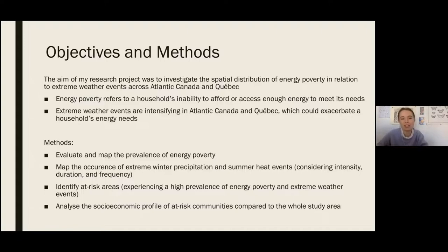So the methods for this project were to evaluate and map both energy poverty and extreme weather events. So for extreme weather events, I was considering intensity, duration, and frequency of these events. And then from there, I could identify at-risk areas. So these were census subdivisions, which is a geographical scale that one can look at, that were experiencing both high prevalence of energy poverty and extreme weather events. And then finally, I analyzed the socioeconomic profiles of these communities and compared them to the whole study area to see if there were any differences.